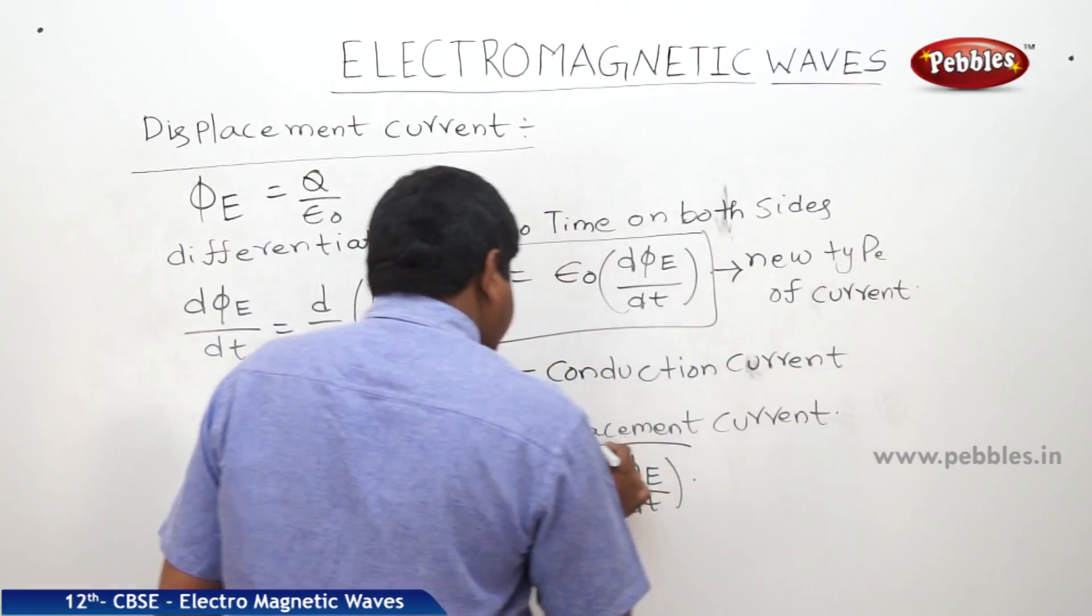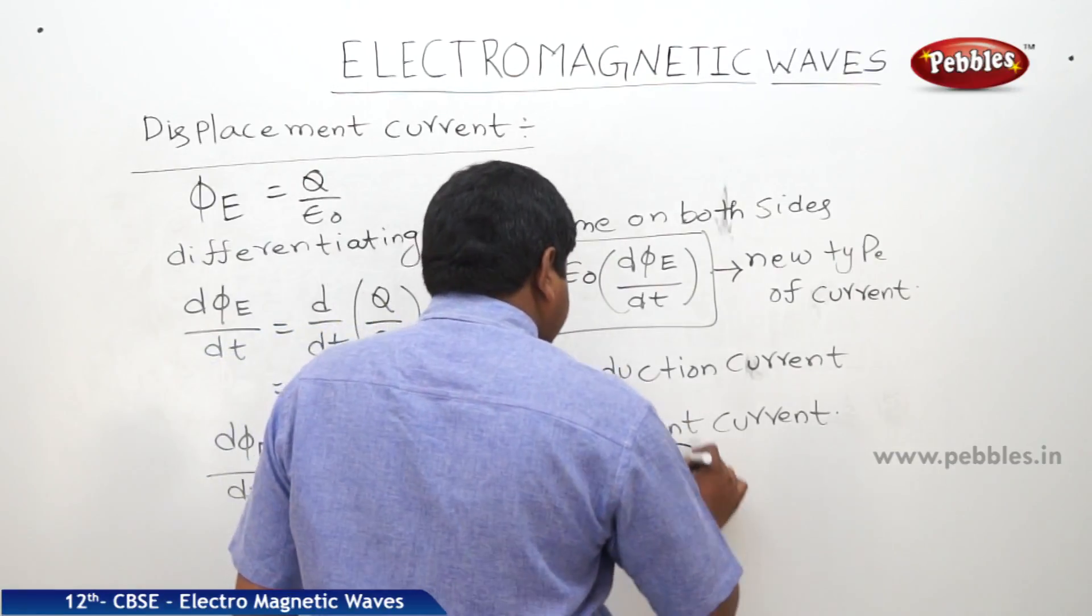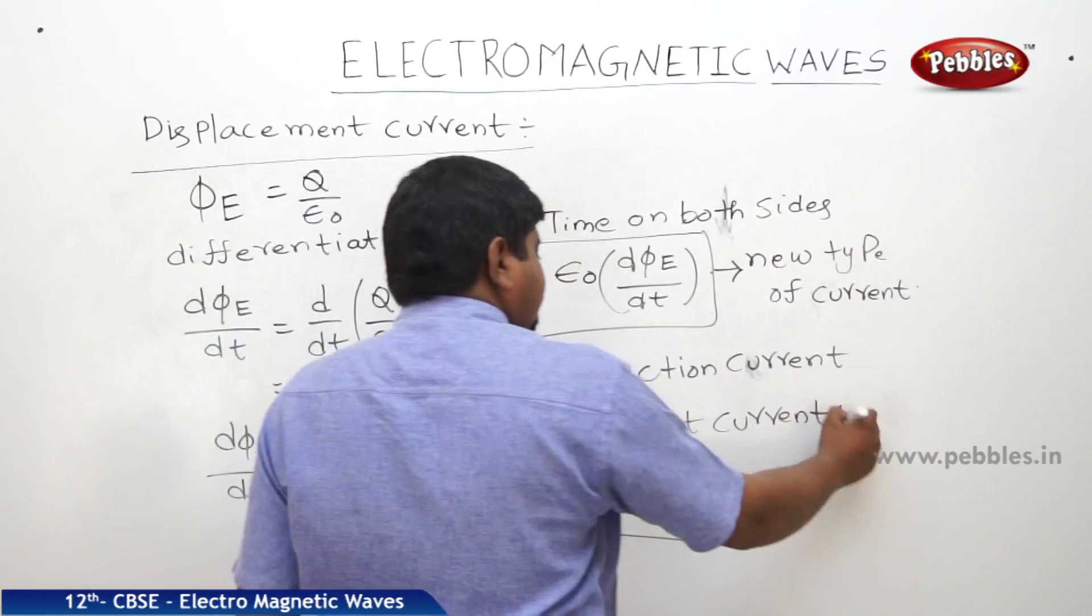So, therefore, this is the expression of the displacement current. It is displaced by small d.